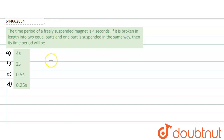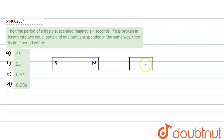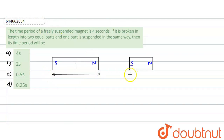Consider the original magnet. We break it into two equal parts. One part has a north pole and the other end becomes south. If the initial length is L, then the new length of each part would be L/2.